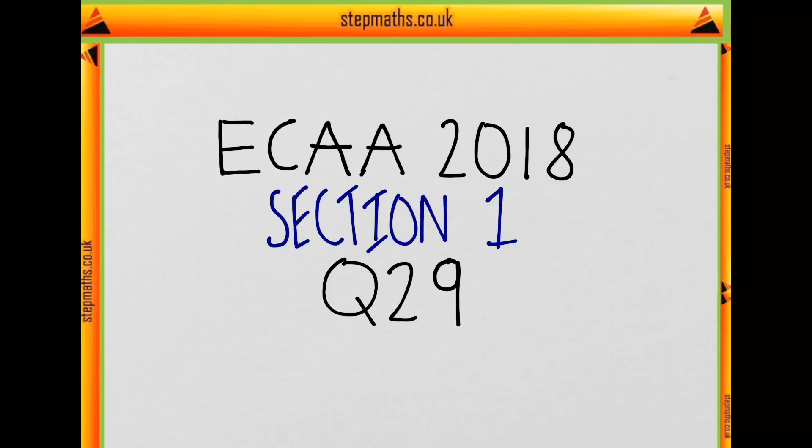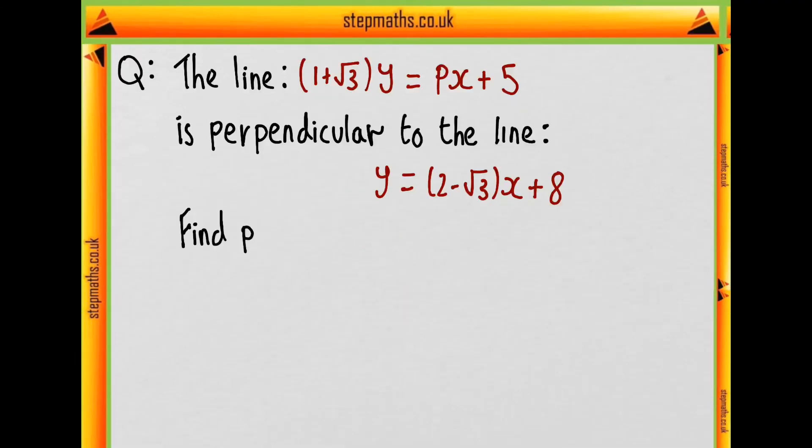This is question 29 from section 1 of the 2018 ECAA paper. In this question we're given the line (1+√3)y = px + 5, and we're told this line is perpendicular to the line y = (2-√3)x + 8. Given this information we're asked to find p.